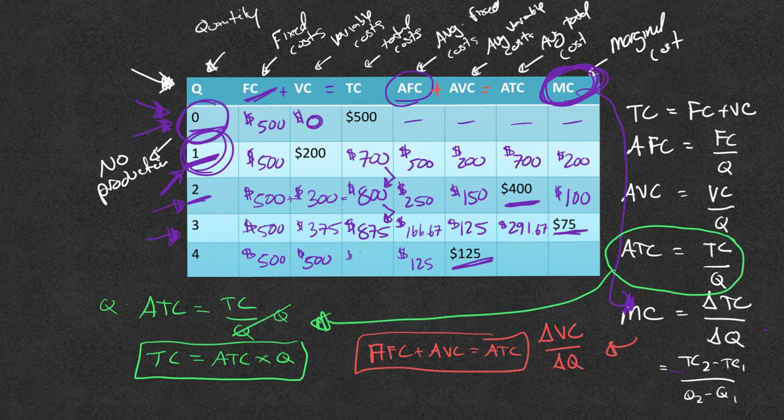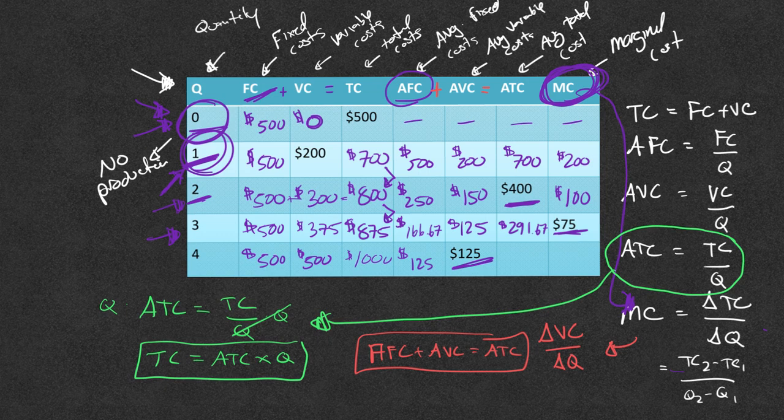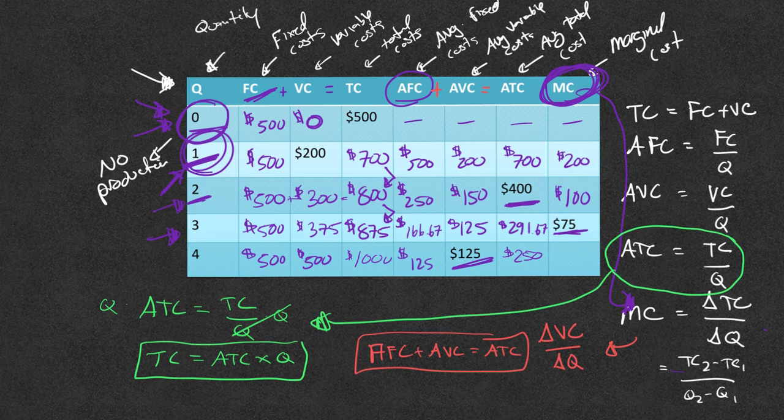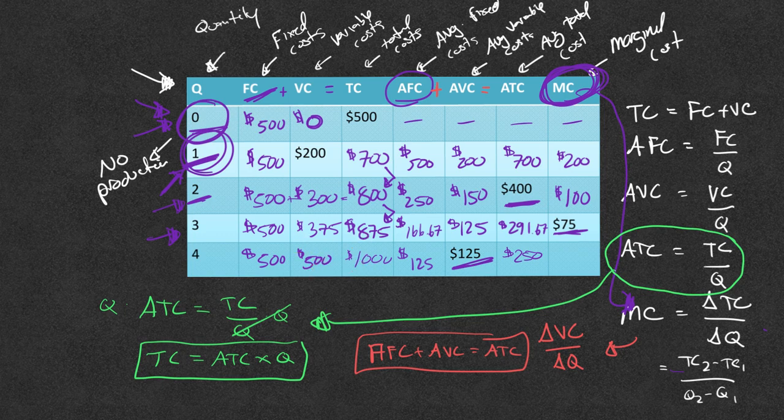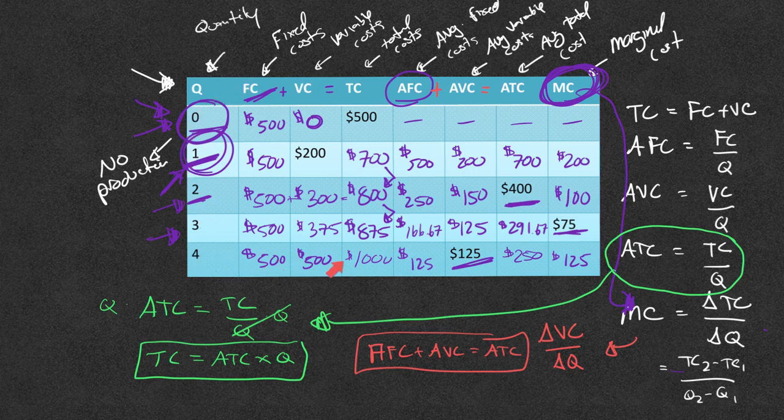500 plus 500 is 1000 for the total cost. If I divide 1000 by four, I'll get 250 for the average total cost. And then the last thing I need to figure out is marginal cost, which is just how much did this change, right? How much did it change from 875 to 1000 or from 375 to 500? And we see the marginal cost is 125. So there you have it. This is how you solve for a table like this.